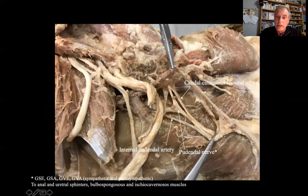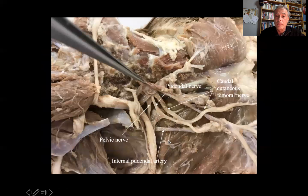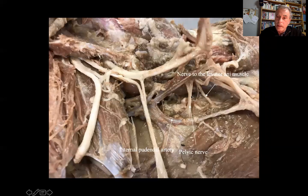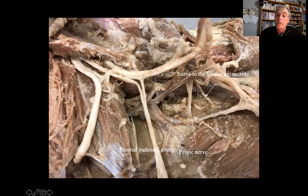Here again we see the sciatic nerve, the caudal cutaneous femoral nerve coming from the sacral spinal nerves, and the pudendal nerve running with the internal pudendal vessels. In another image: the pudendal nerve again, the caudal cutaneous femoralis nerve, and the pelvic nerve — in this case there is just one pelvic nerve. We could have one or two pelvic nerves coming from the ventral rami of the sacral spinal nerves.